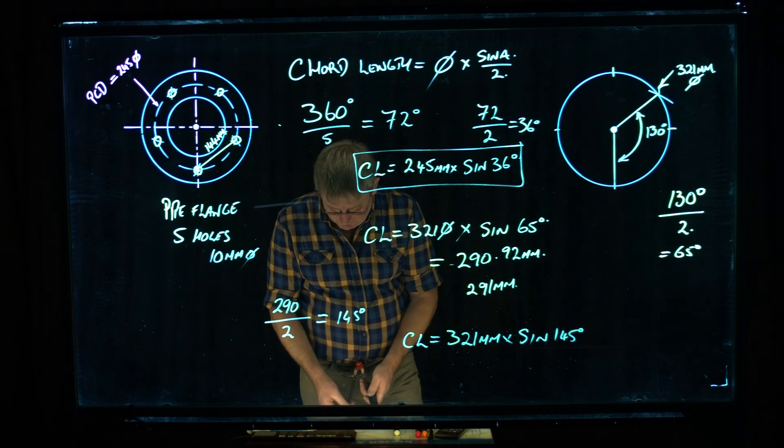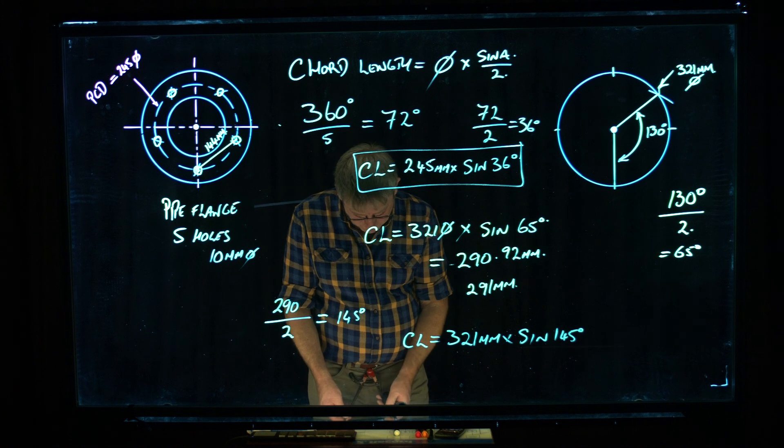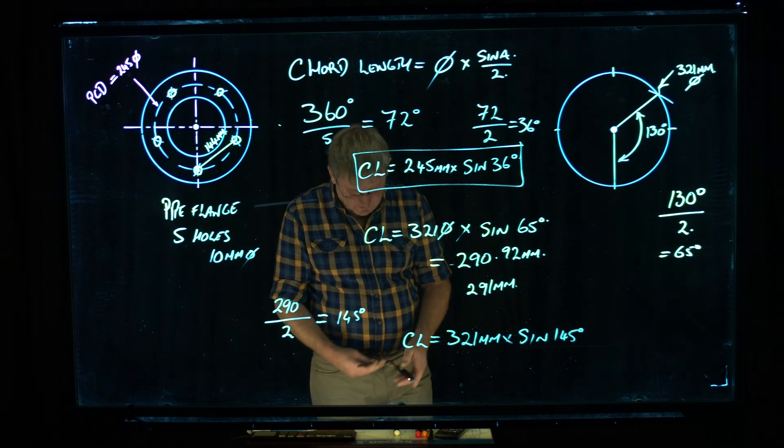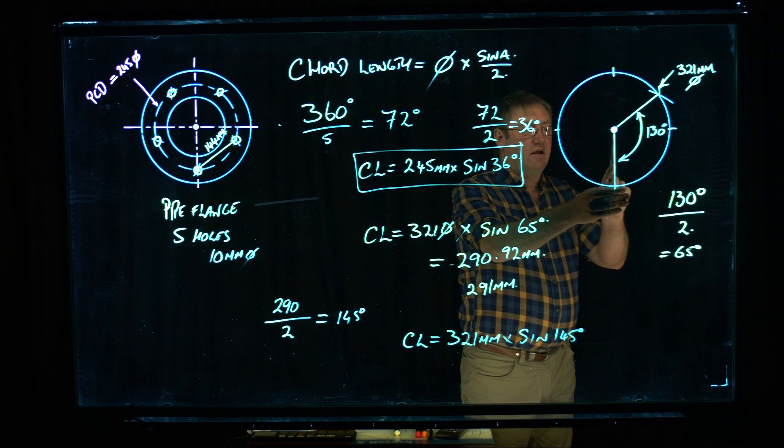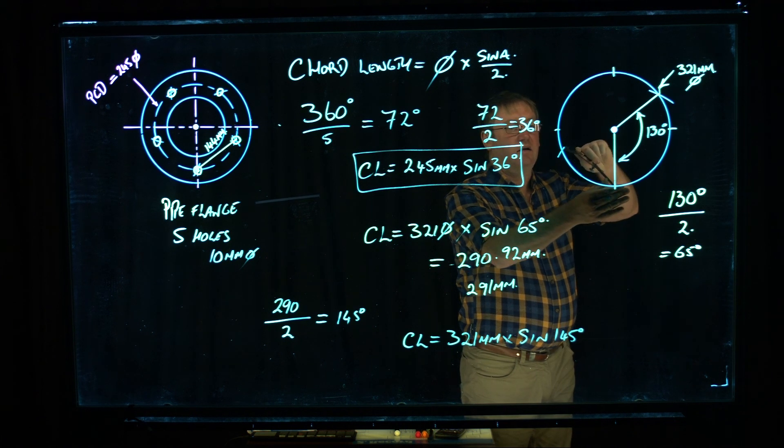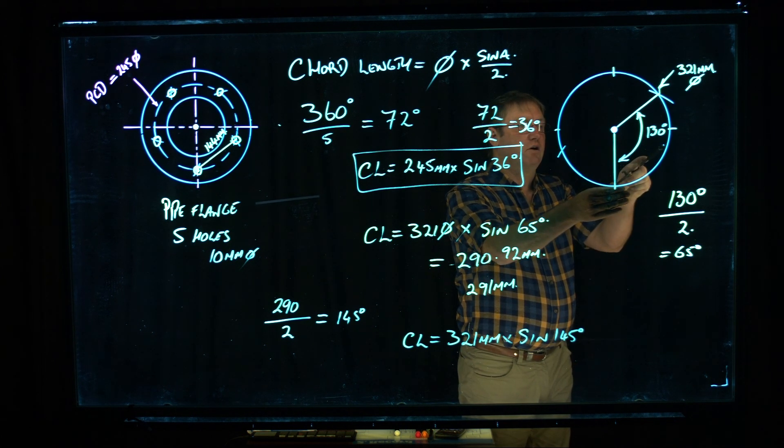So just setting my compass up to that, 184, now if I put that in there, and swing my arc, I mean I could swing it both sides.